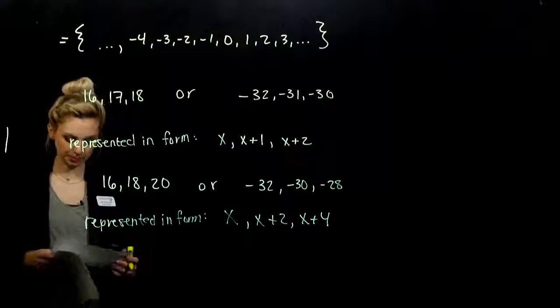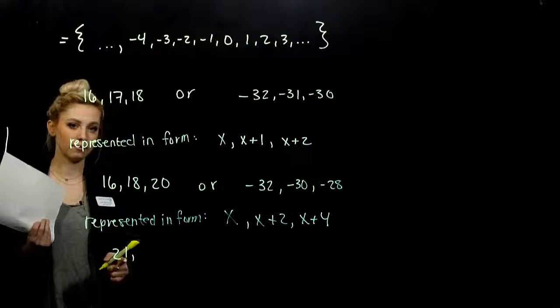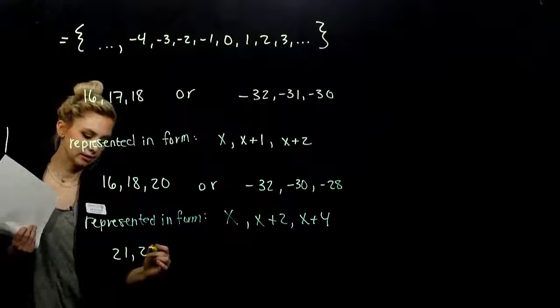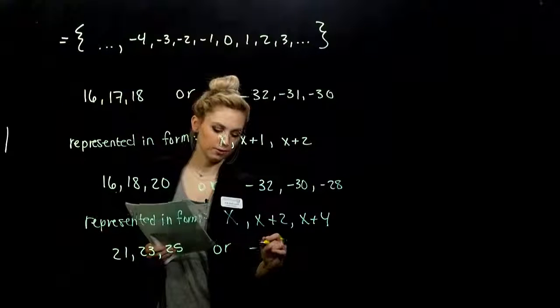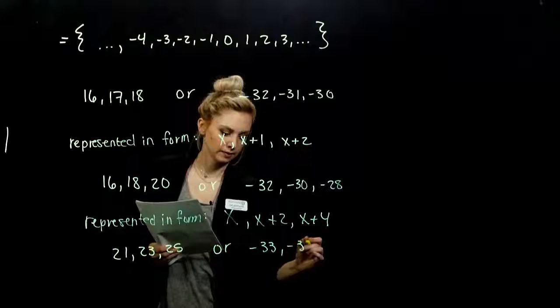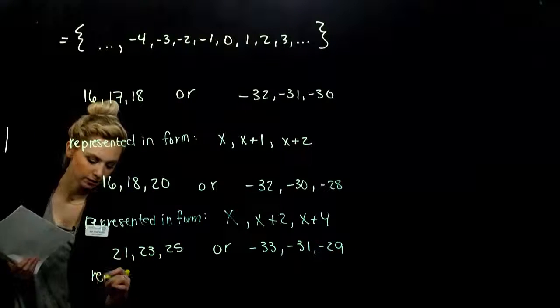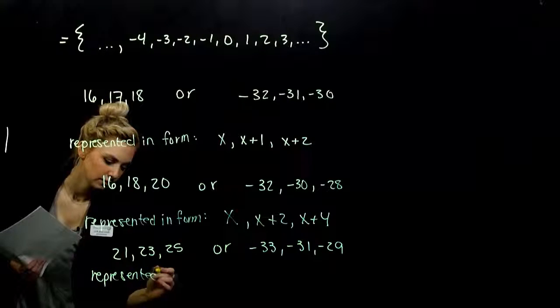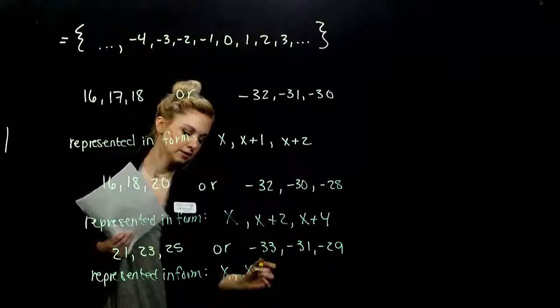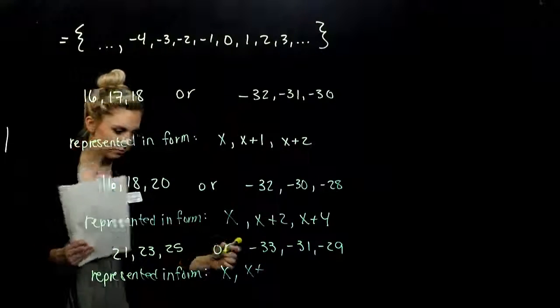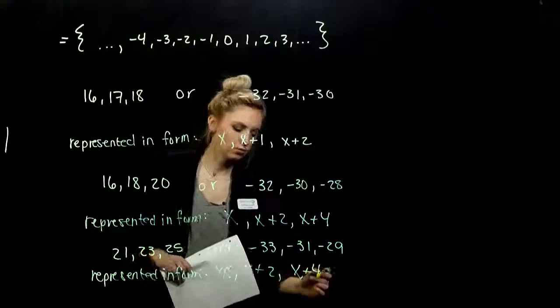So odds works pretty similar. Let's say I start with 21. The next consecutive odd, the next odd on the list is 23. Next to that one, 25. Same story for negatives. So how do we represent those with a generic form? Represented in the form x. x plus what? 2 again. Next consecutive in terms of the original, x plus 4.